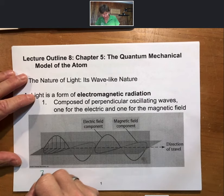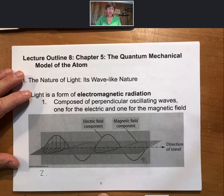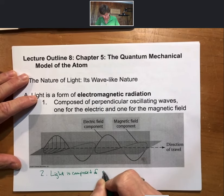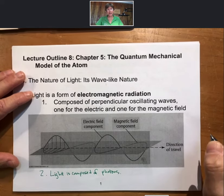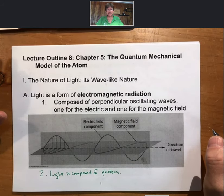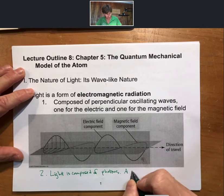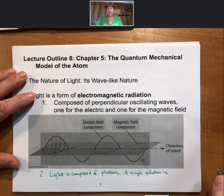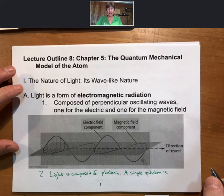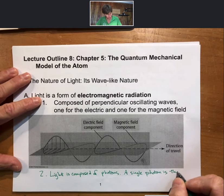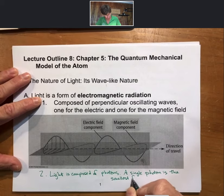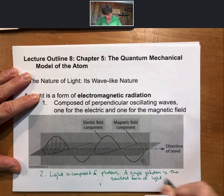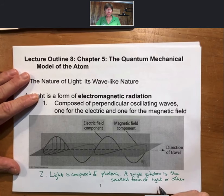Another thing I want to point out is that light is composed of photons. And the smallest amount of light is a single photon. So a single photon is the smallest form of any kind of electromagnetic radiation, including light, including visible light.